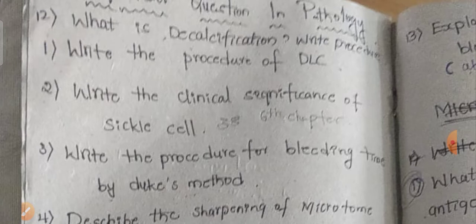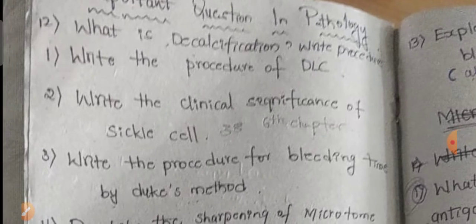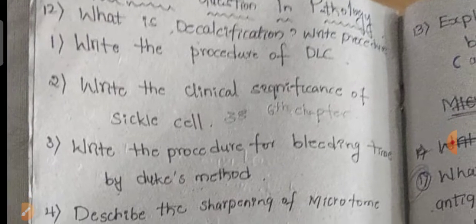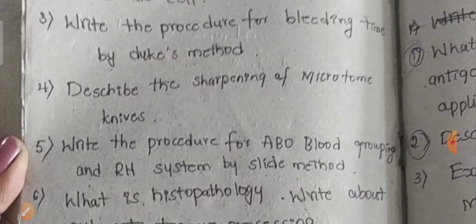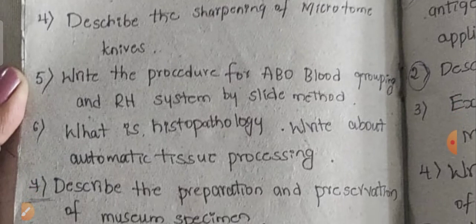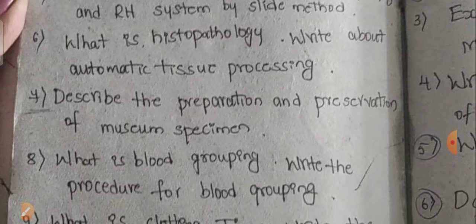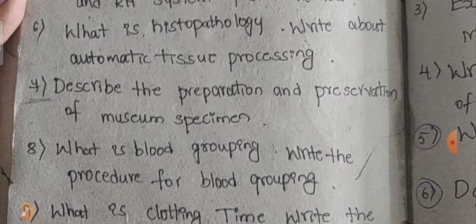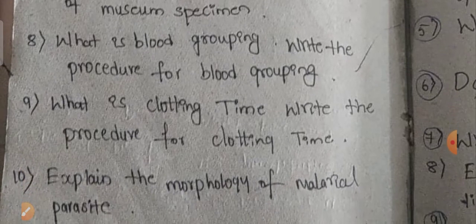Let me go through them one by one. What is decalcification? Write precautions and write the procedure of DLC. Write the clinical significance of sickle cell. Write the procedure for bleeding time by Duke's method. Describe the sharpening of microtome knives. Write the procedure for ABO blood grouping and Rh system by slide method. What is histopathology? Write about automatic tissue processing. Describe the preparation and preservation of museum specimens.